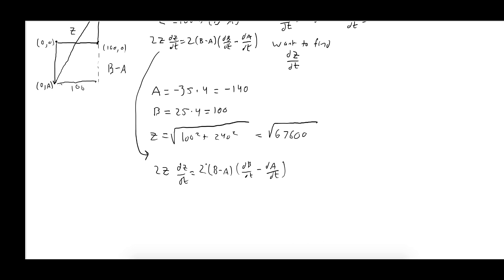We had 2Z dZ/dt is equal to 2(B minus A) times (dB/dt minus dA/dt). Cross out the 2's and we have dZ/dt is equal to (B minus A) times (dB/dt minus dA/dt) all over Z